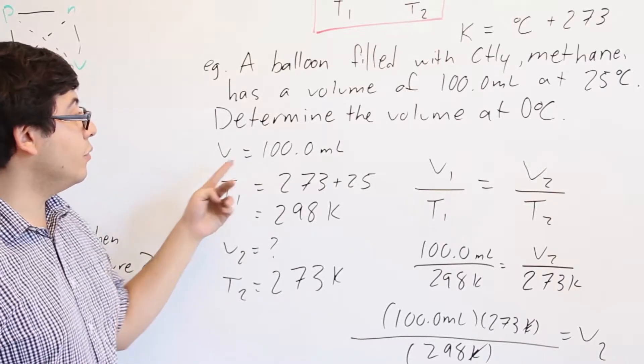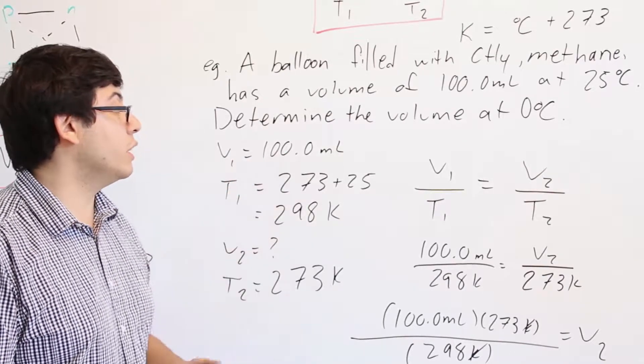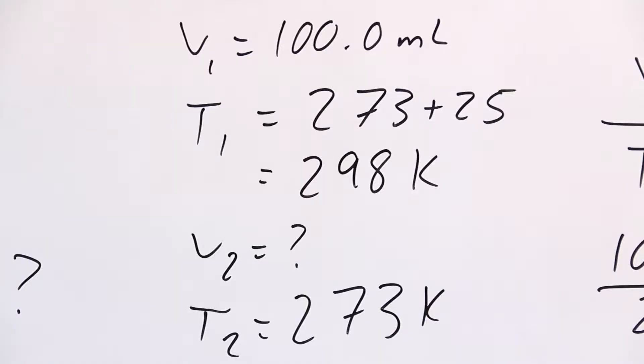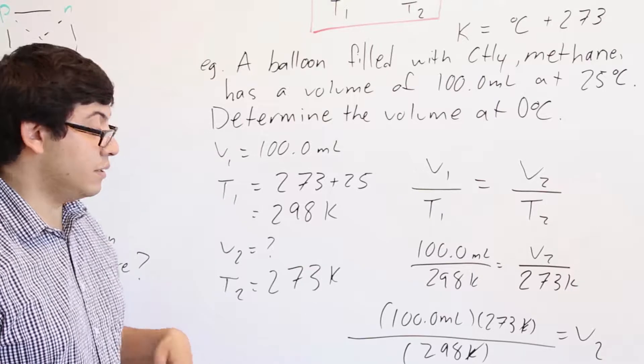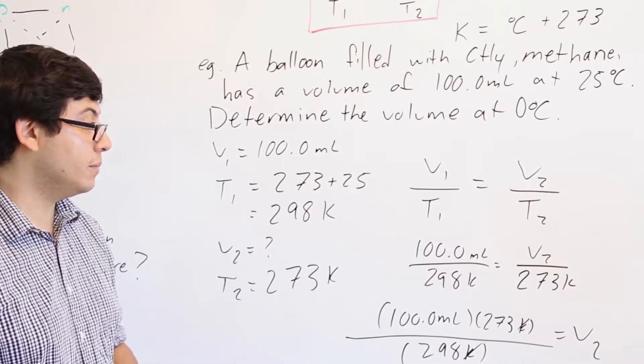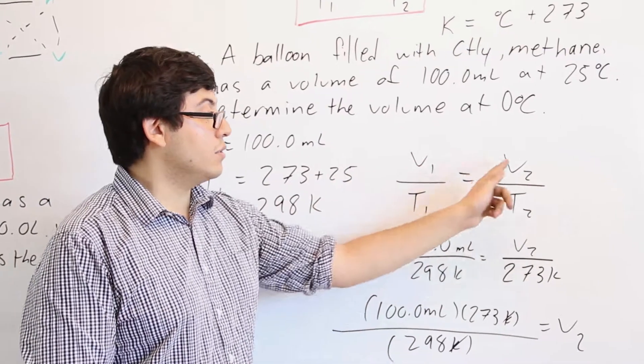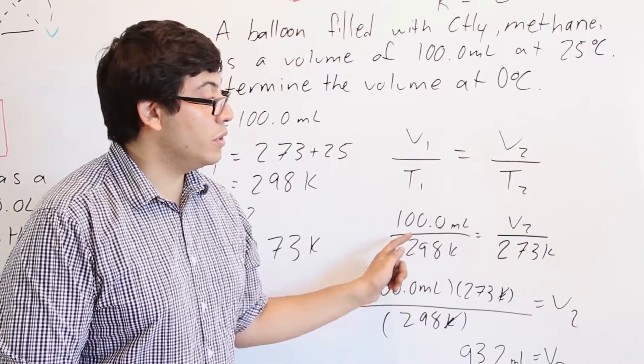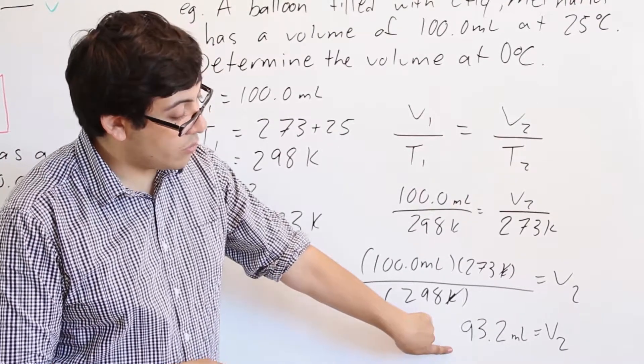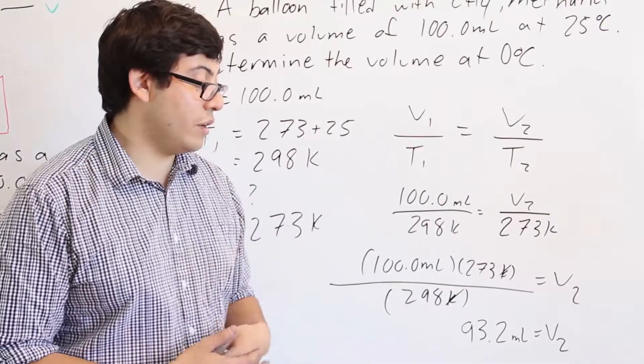So if you list out everything we have, we have V₁ is equal to 100 milliliters. T₁ is not equal to 25, but it's equal to 273, remember, because we need it in Kelvins. So it's 298 Kelvins. V₂ is what we're trying to find, and T₂ is 0 plus 273 to give us 273 Kelvin. So V₁ over T₁ equals V₂ over T₂, and when we do the math we end up with just this rearrangement, and it gives us 93.2 milliliters as our final volume.